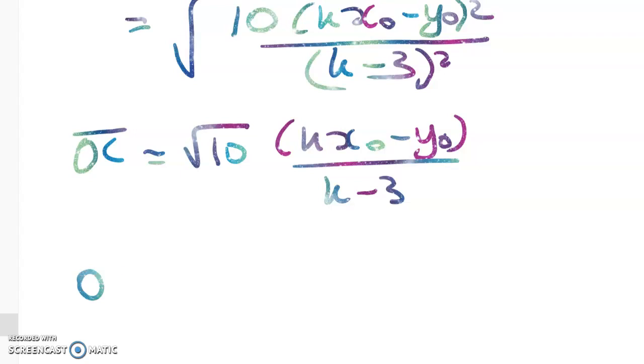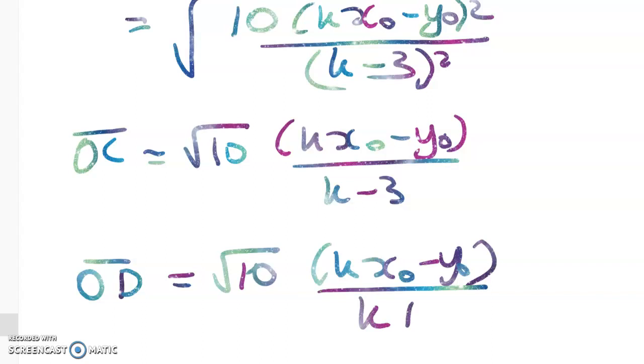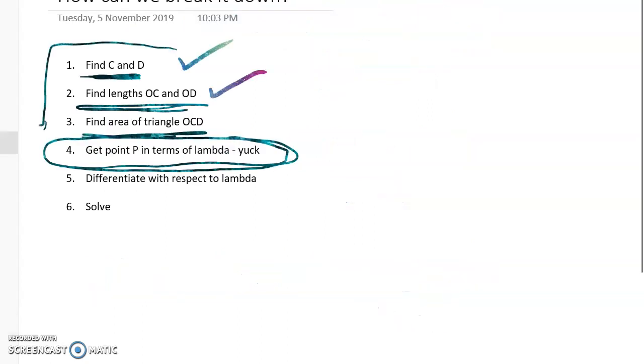So length OC is equal to √10 times (kx₀ - y₀)/(k - 3). And you can do the same thing for OD. You end up getting this: √10 times (kx₀ - y₀)/(k + 3). So we're not there yet, but here's the breakdown. We've found those lengths.